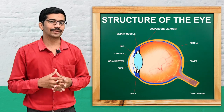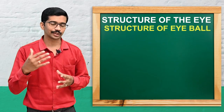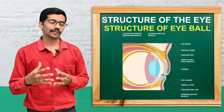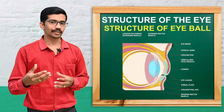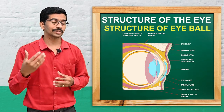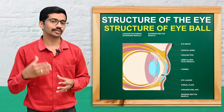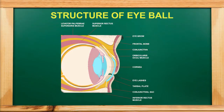Now we will go into detail regarding the structure of the eyeball. Anatomically, the eyeball has three different layers: the outer layer, which contains the sclera and cornea; the middle layer, which contains the choroid; and the inner layer, which is the retina.